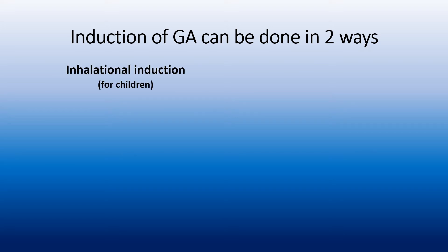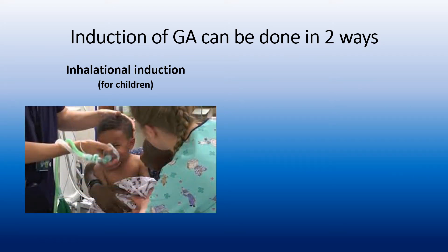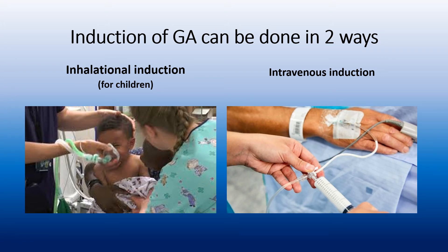Induction of general anesthesia can be done in two ways. Either inhalational induction — this is mainly used for children, and it is done by letting the child breathe the anesthetic gas through the face mask until he falls asleep — or intravenous induction, which is done by injecting the anesthetic drug through the intravenous line.